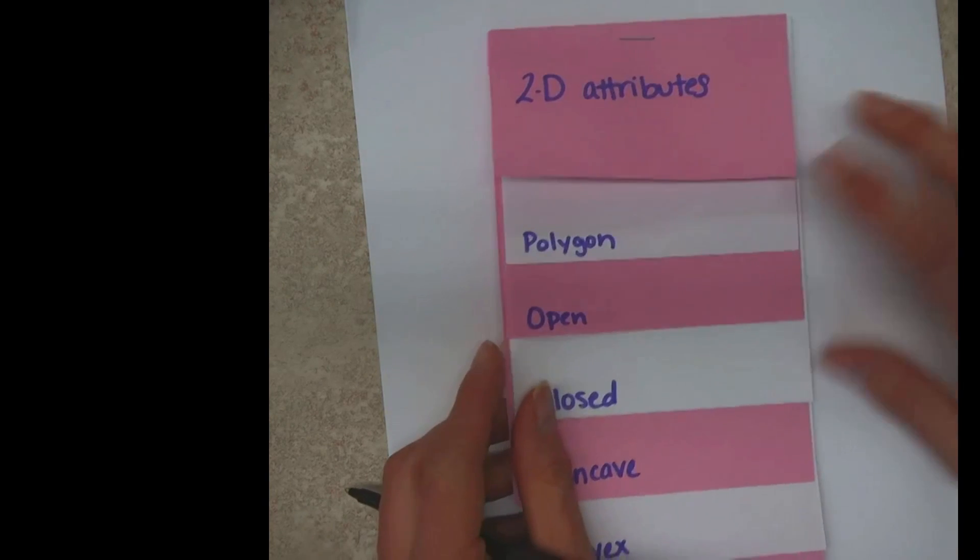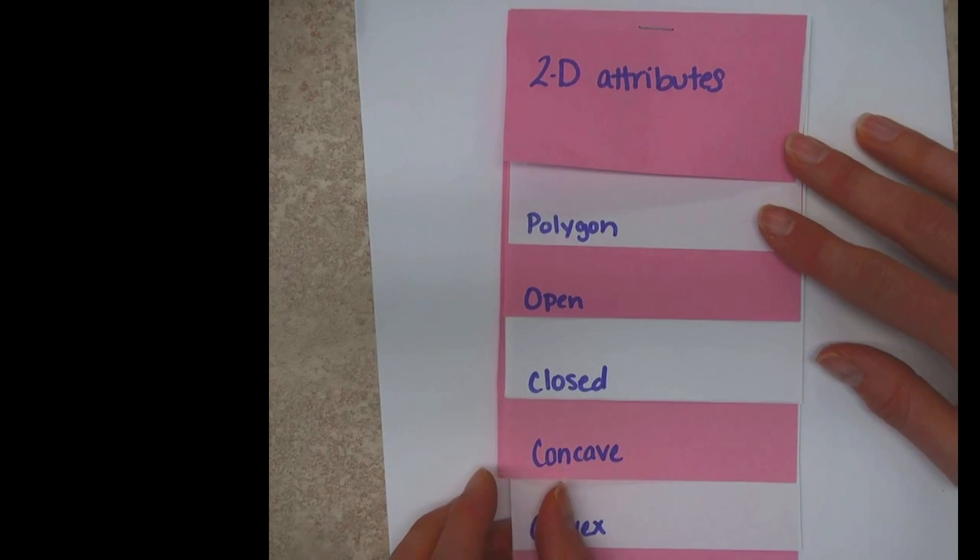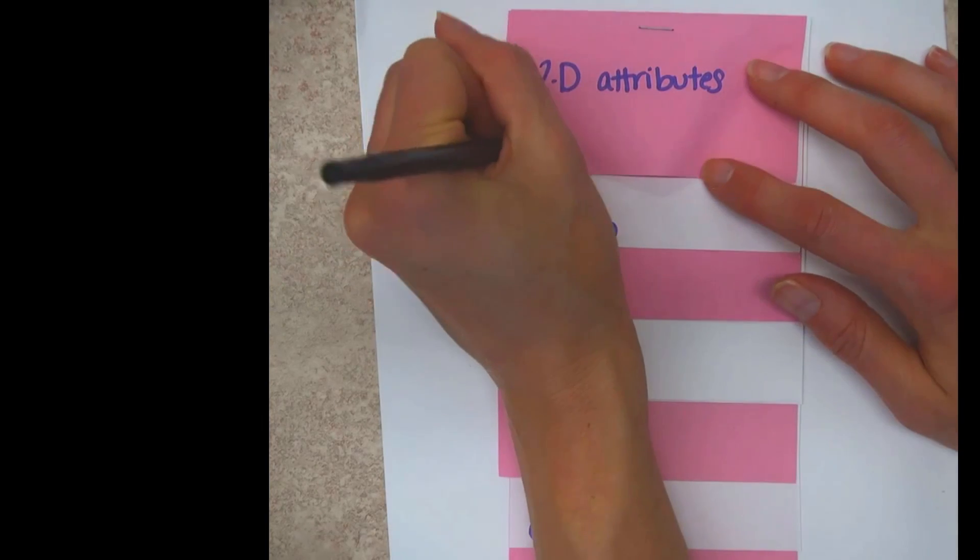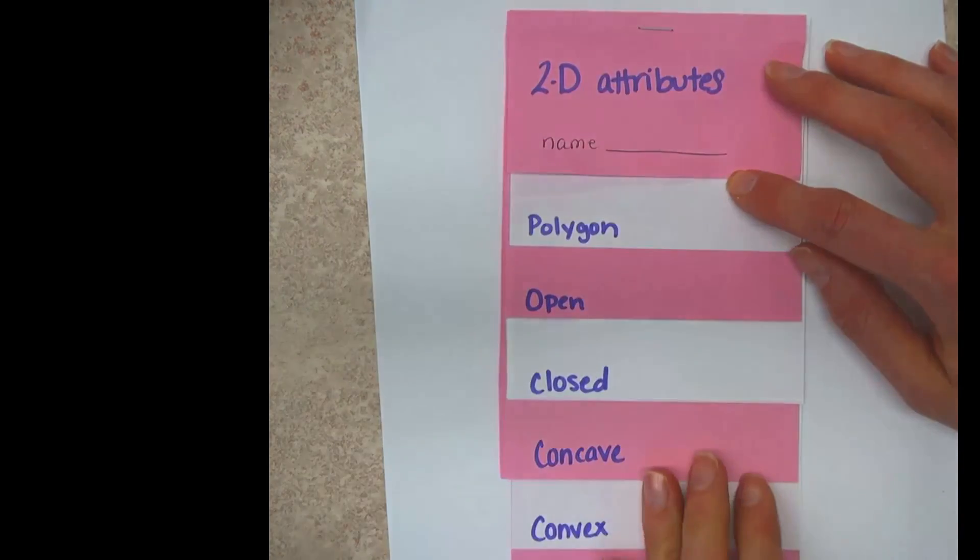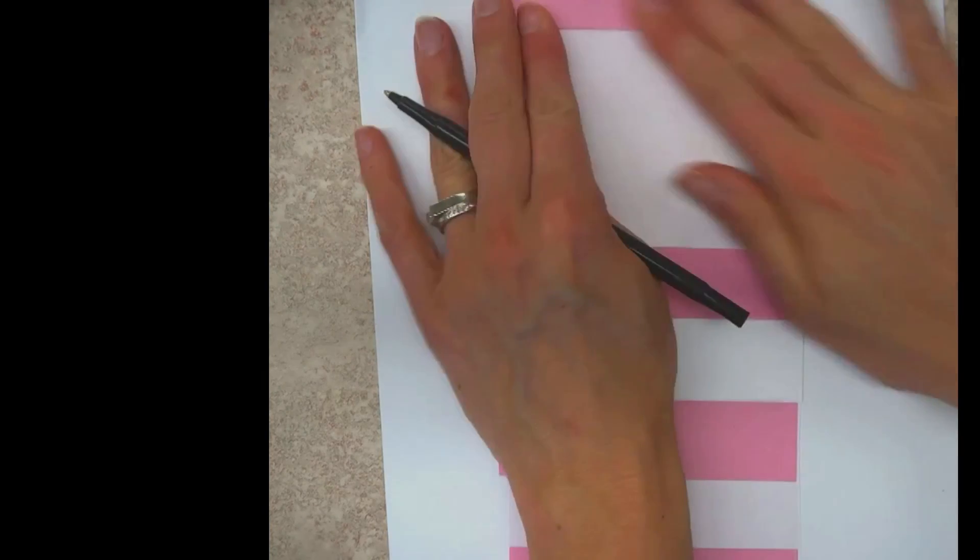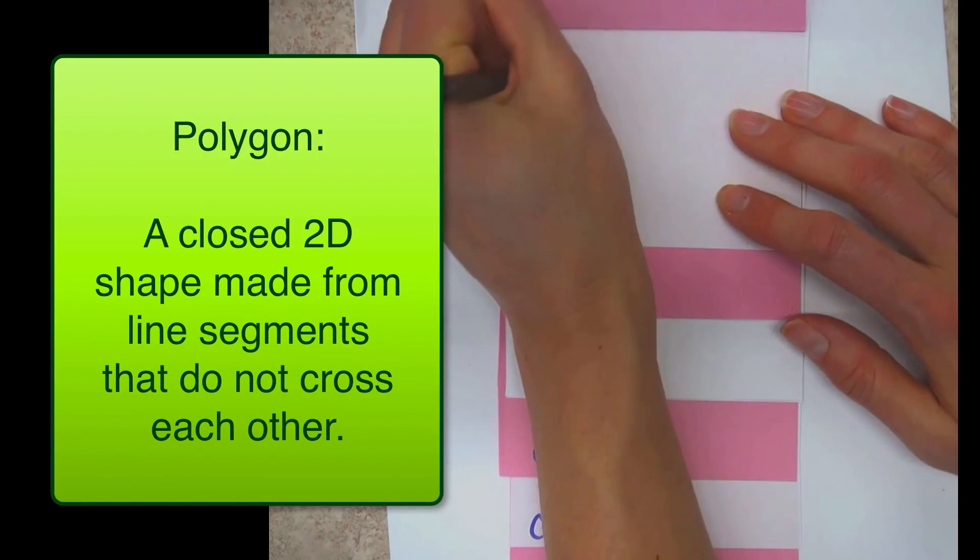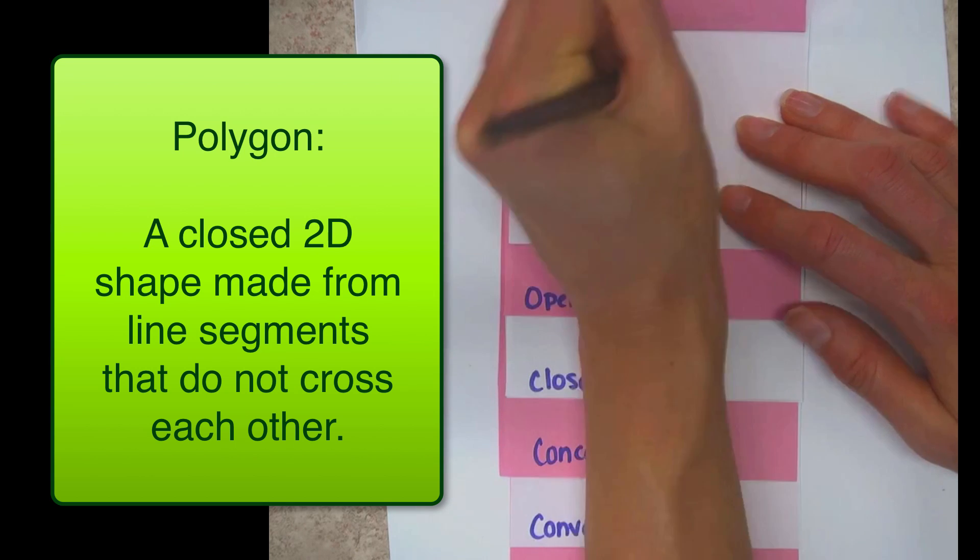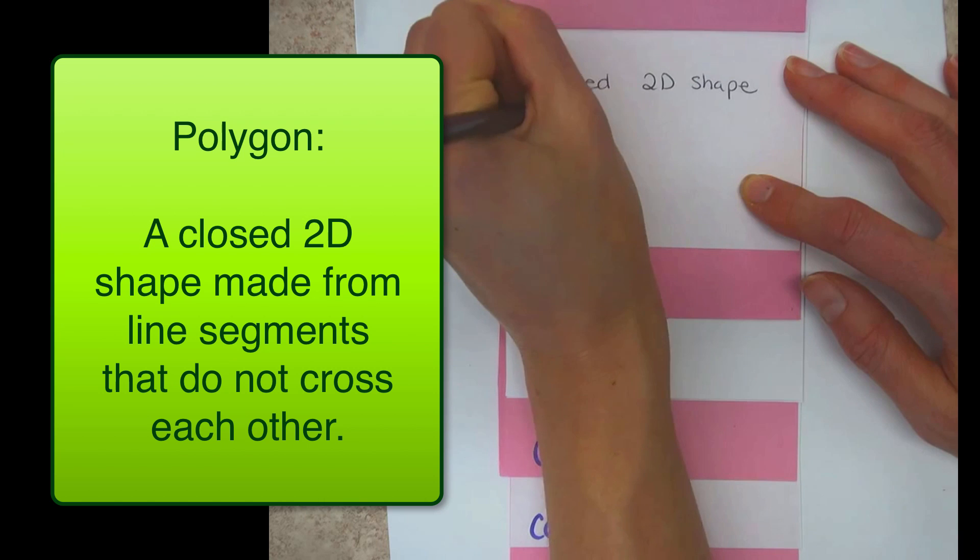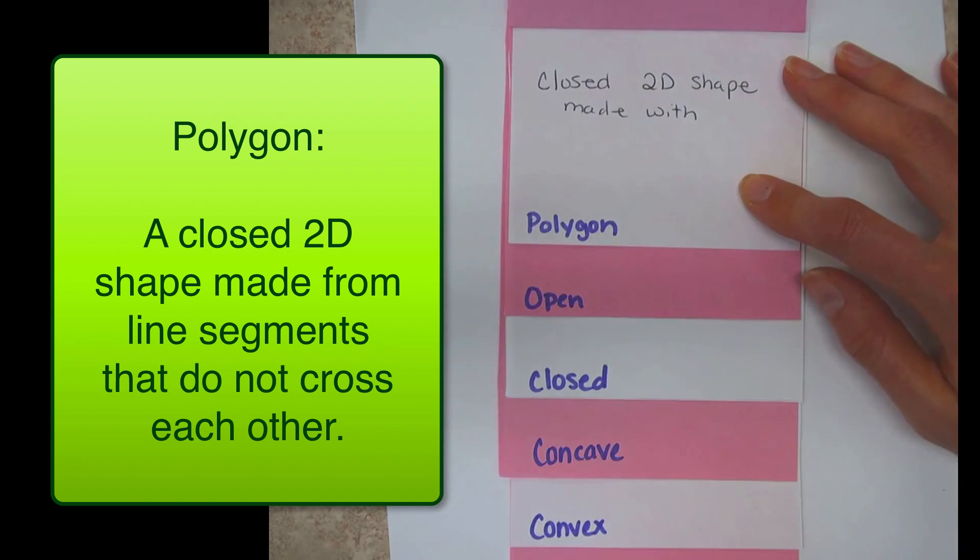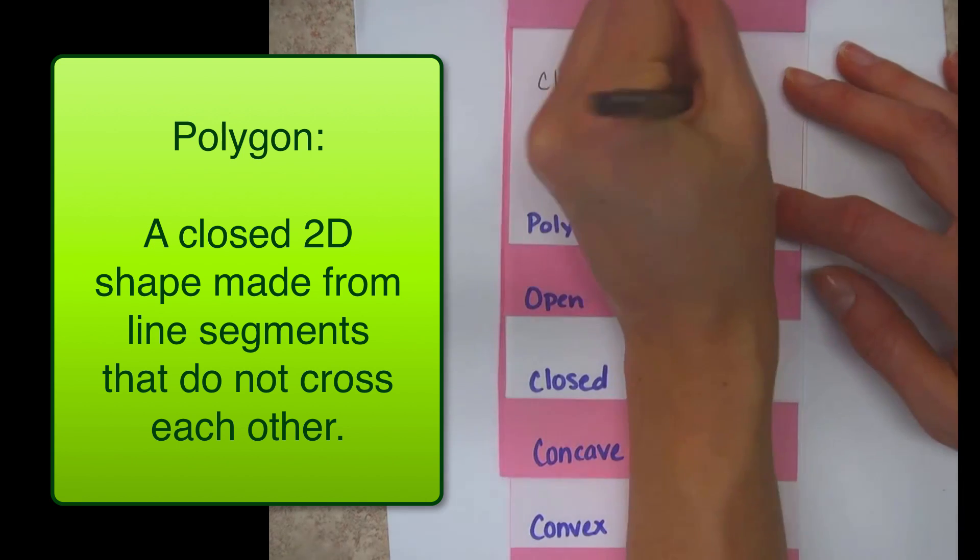And on to your last one. Last one is two-dimensional attributes. So these are attributes that you will find in a whole bunch of different two-dimensional shapes. Let me show you a little name here. The first one is polygon, which is a closed two-dimensional shape made from line segments that do not cross each other.